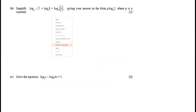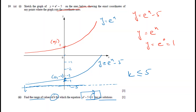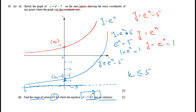For the x-intercept, we set y = 0 in y = eˣ - 5, giving eˣ = 5. Taking the natural log of both sides: ln(eˣ) = ln 5, so x = ln 5. Therefore the x-intercept is at (ln 5, 0).